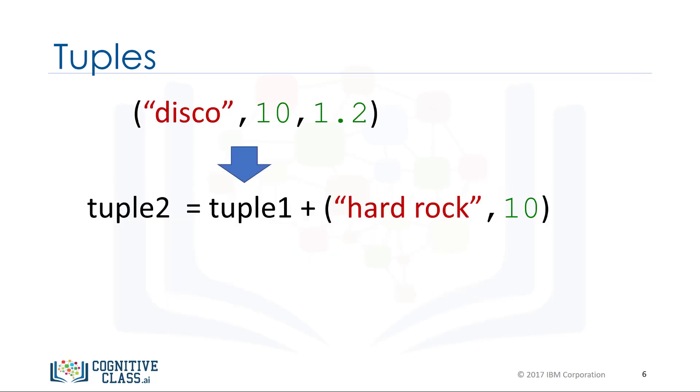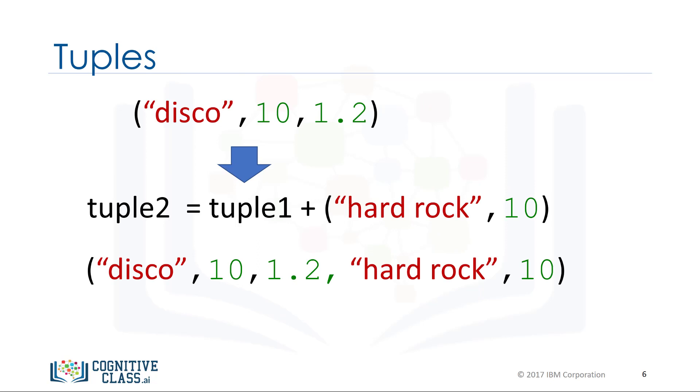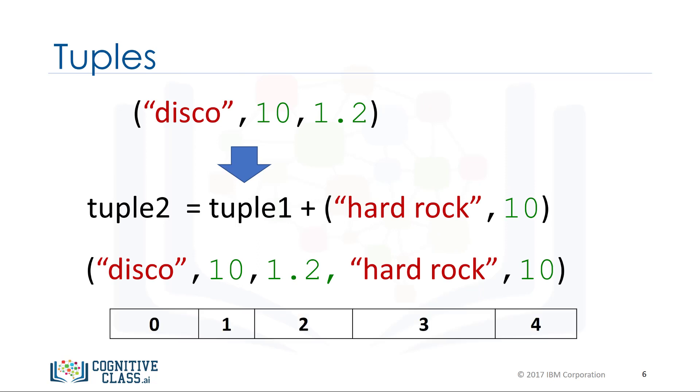We can concatenate or combine tuples by adding them. The result is the following, with the following index.